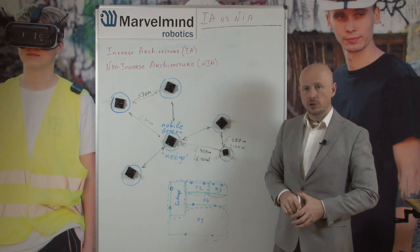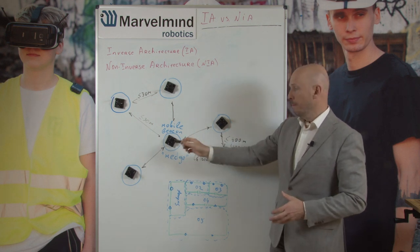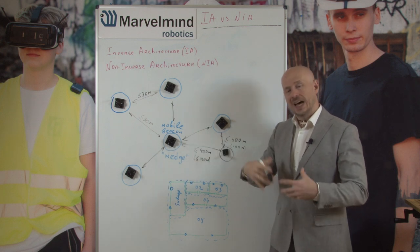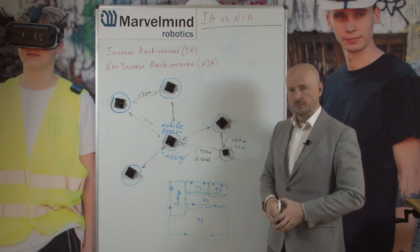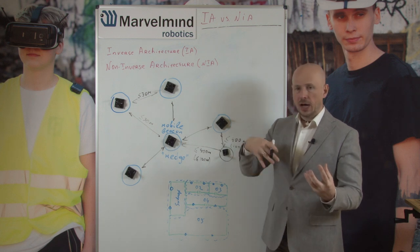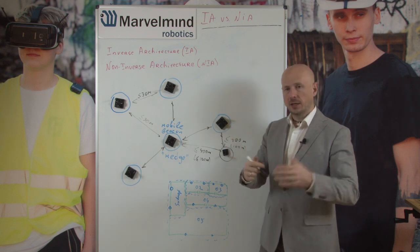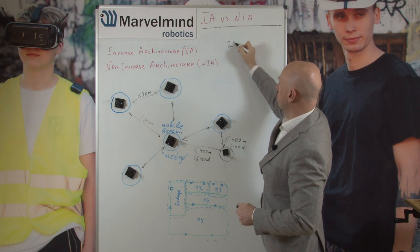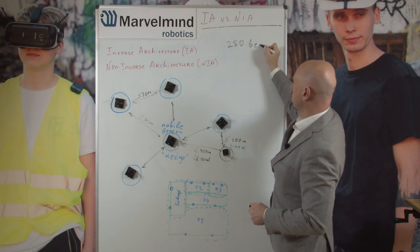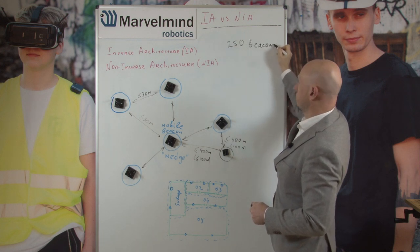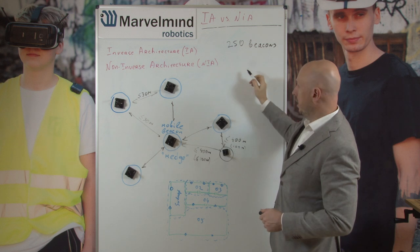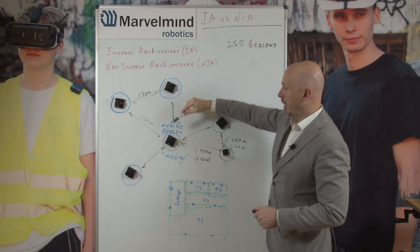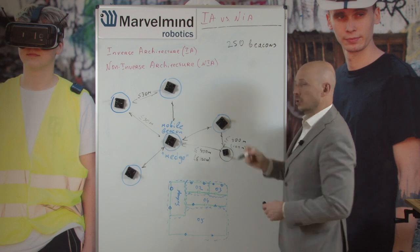The same applies in inverse architecture — you may have many mobile beacons without location update rate reduction. In both cases, IA and NIA, we support up to 250 beacons total, combining stationary and mobile.